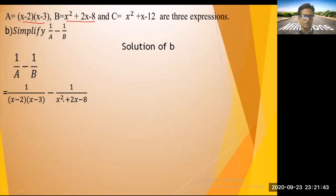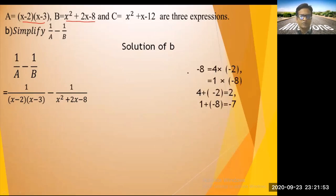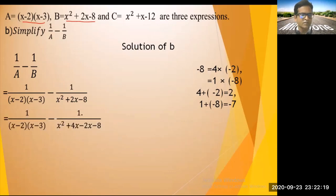To factor x² + 2x - 8: we need two numbers whose product is -8 and sum is 2. Check: 4 × (-2) = -8 ✓ and 4 + (-2) = 2 ✓. So rewrite as x² + 4x - 2x - 8.